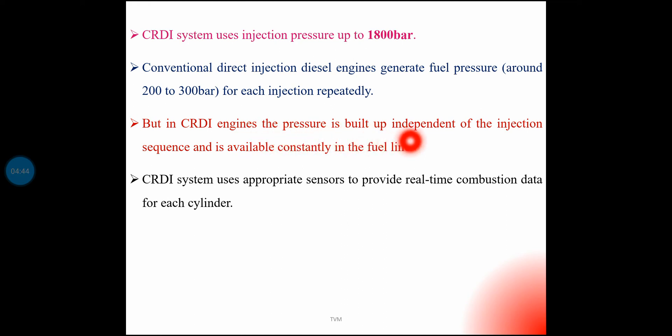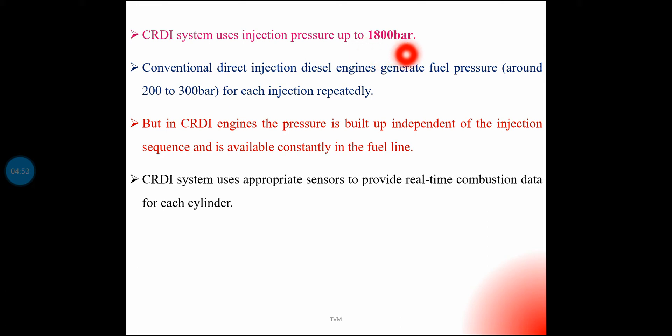In CRDI engines, the pressure is built up independent of the injection sequence and is available constantly in the fuel line. The pressure is maintained at all times in the common fuel line.